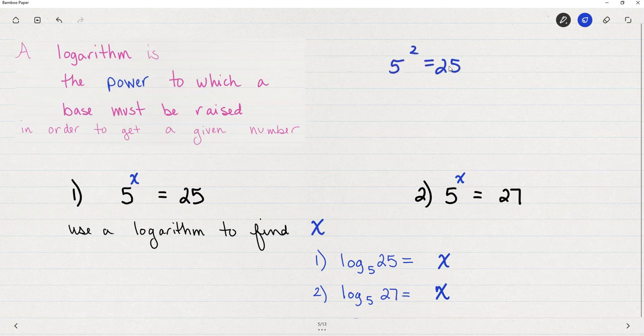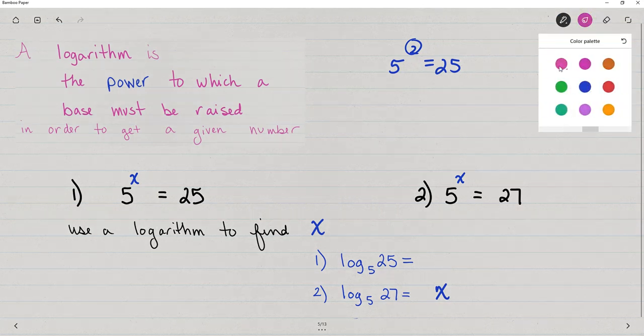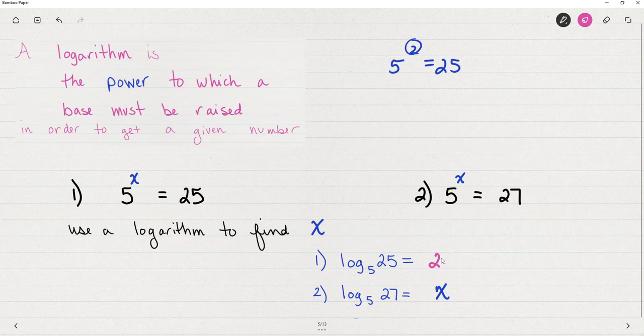Well, you've just calculated your first log. The log base five of 25 is simply going to be two. Five to the second power is 25. So in this first case, log base five of 25 is simply two. That's what a log is. It's finding the exponent. What exponent would I raise this five to to get a 25? The answer is two.